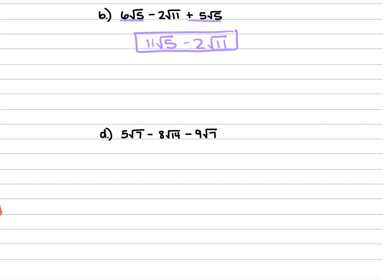For part D, we have 5 square root of 7 minus 8 square root of 14 plus 9 square root of 7. The 14 is just 2 times 7, so it doesn't break down further. We combine the 5 square root of 7 and 9 square root of 7: 5 plus 9 is 14, giving us 14 square root of 7 minus 8 square root of 14.